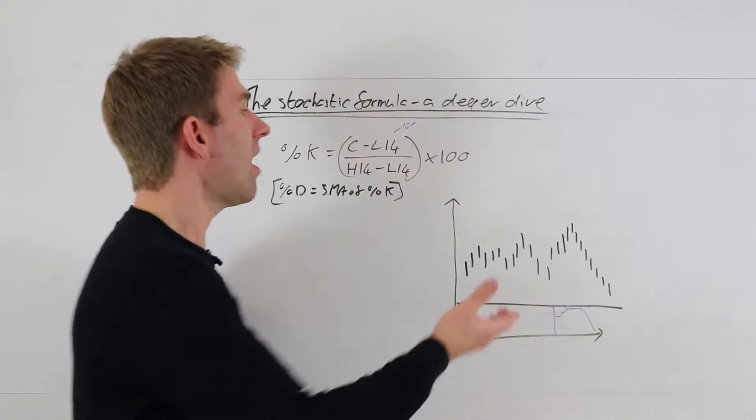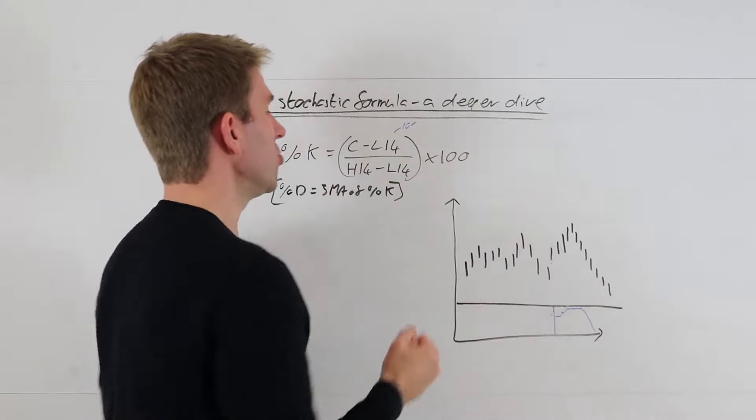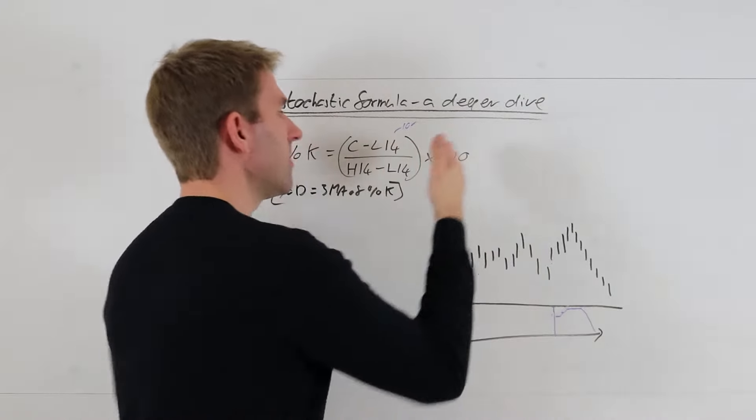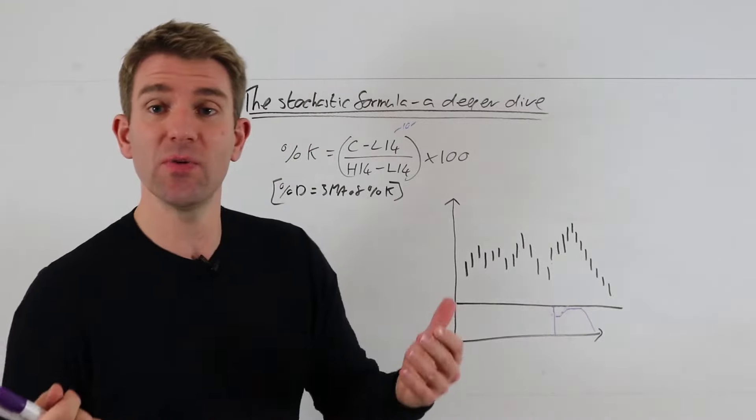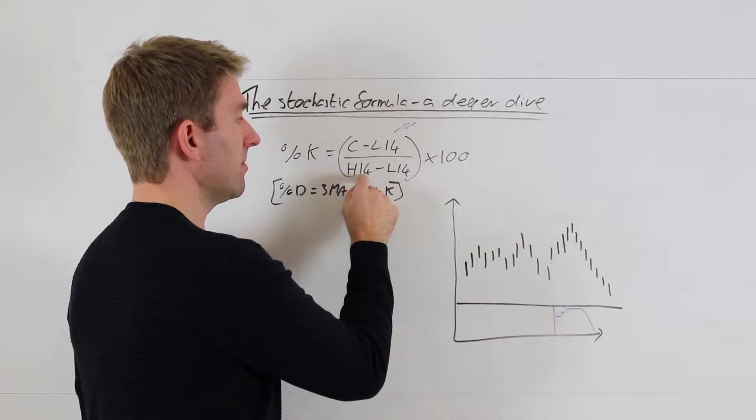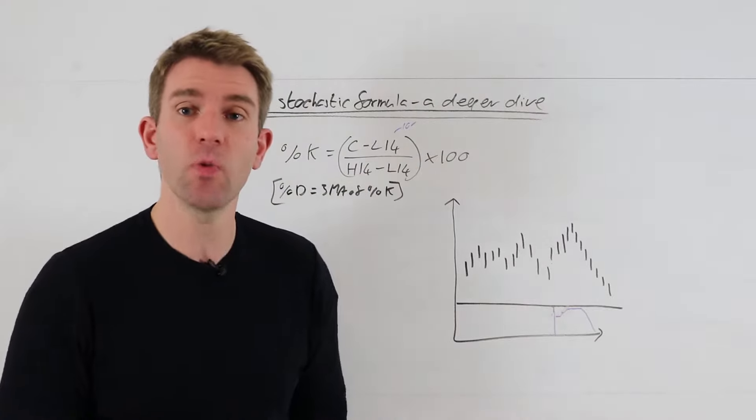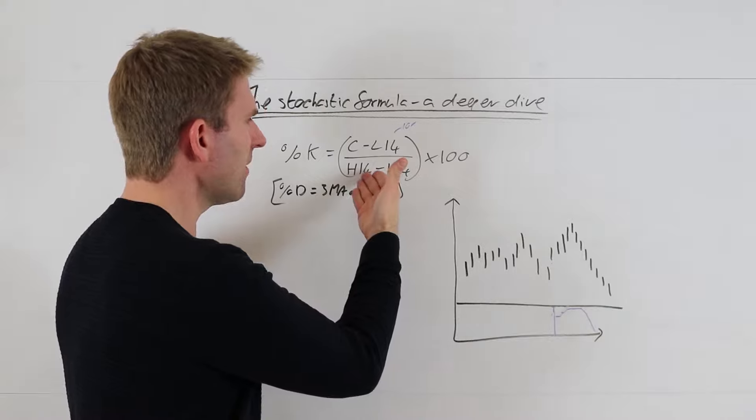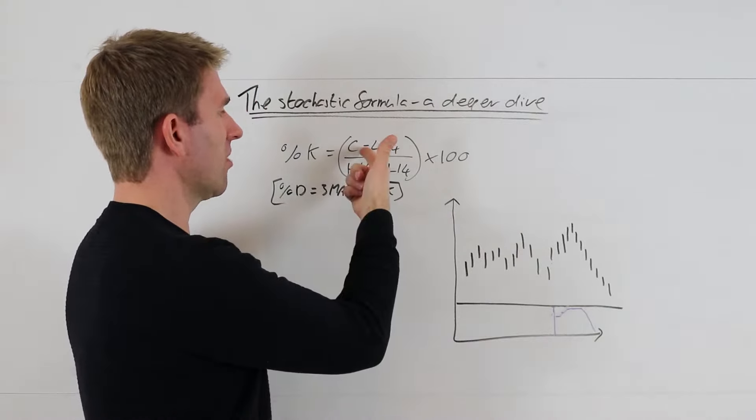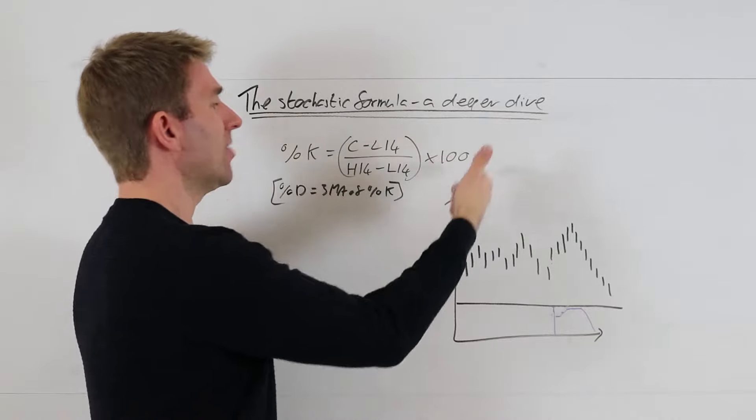Similarly, the highest point we can get to be 100 would be if whatever we get here times by the 100 is one. In other words, if we are the high of the range, if this number here equals that number there, that equals one.